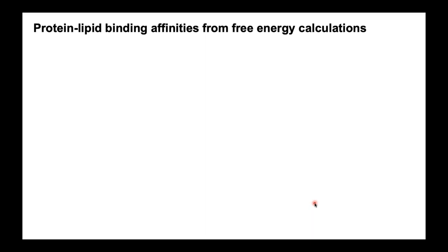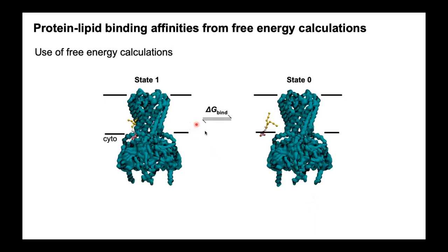Increasingly, we're interested not just in if and where a lipid might bind, but also what the affinity of this interaction is. In a complex membrane environment, how likely is it that our specific lipid will bind to the binding site rather than a different lipid? One way of doing this is using free energy calculations. Simply put, it involves simulating two key states: state one, where the lipid is bound to the binding site, and state zero, where the lipid is free in the membrane. The difference between these states is delta-G bind — the free energy of binding.